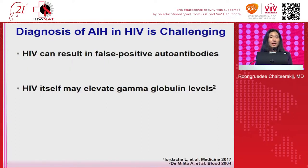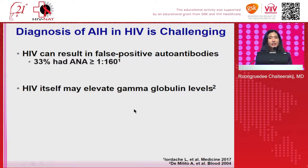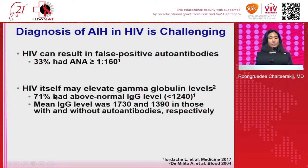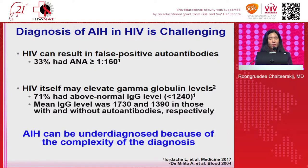Another reason making the diagnosis of AIH in HIV difficult is that HIV itself can cause elevation of gamma globulin and also false positive autoantibodies. One cohort study of almost 100 HIV patients found that up to one-third had ANA-positive at high titer, and 20% had high IgG levels — particularly those with autoantibody positive. With all these reasons, AIH can be underdiagnosed because of the complexity of diagnosis.